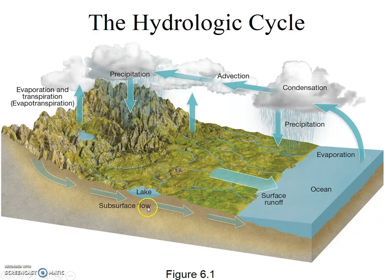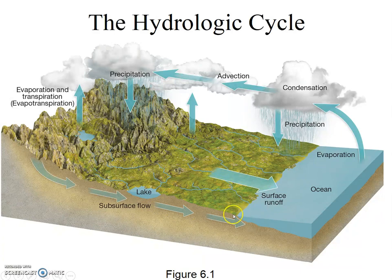Or perhaps precipitation infiltrates down into groundwater. From the groundwater, perhaps plants take up that water, or perhaps it flows through groundwater flow back to the ocean. Indeed, water circulates all throughout the Earth's system, and this continuing cycling of water is called the hydrologic cycle.